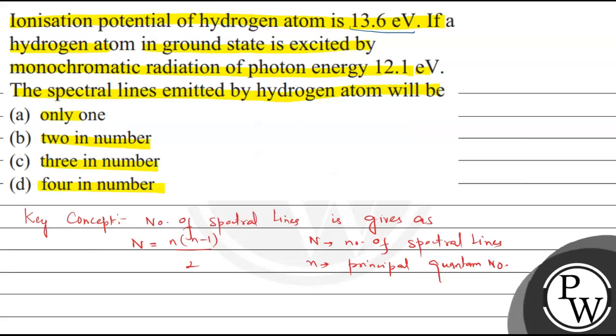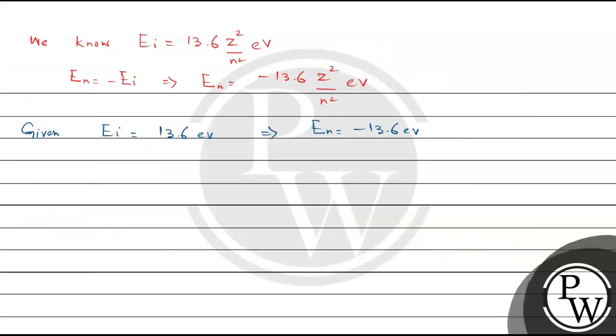The monochromatic radiation has photon energy 12.1 electron volt, so E_photon = 12.1 electron volt.